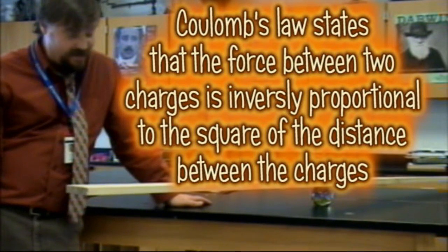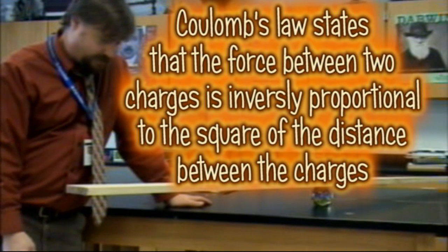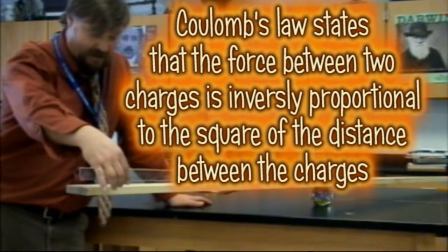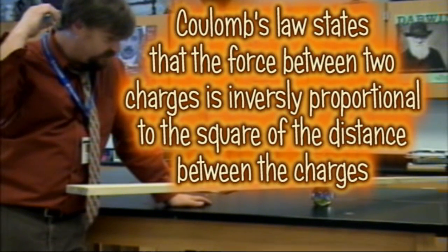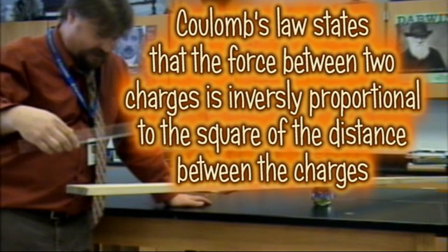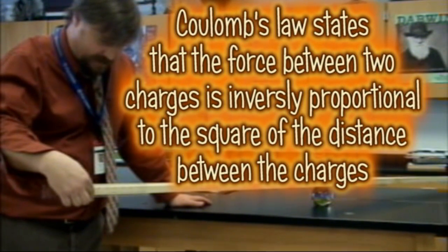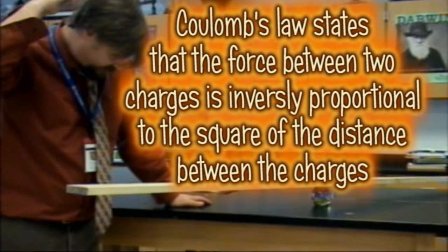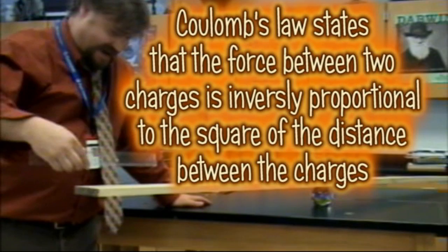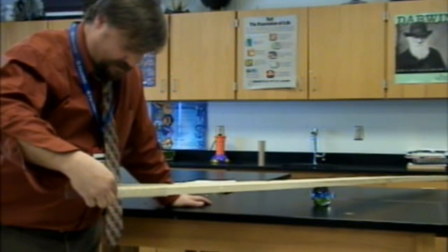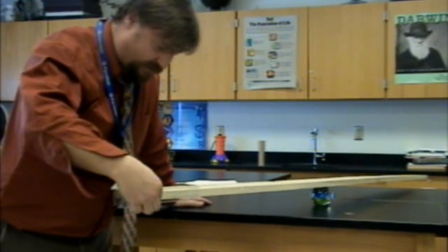Charles Coulomb came up with the inverse square law relationship between force and distance. If you double the distance, you have only one fourth as much force. If you halve the distance, you get four times as much force. We can see this relationship here — at half the distance, there is approximately four times as much force, and you can see a greater acceleration and the board moves over a greater distance, demonstrating the inverse relationship between force and distance.